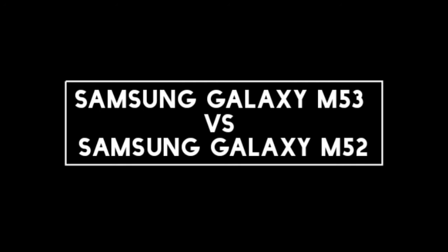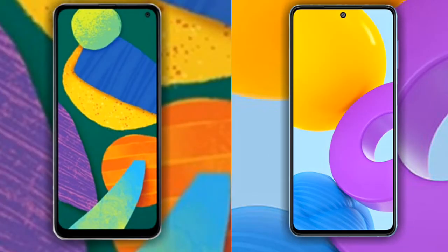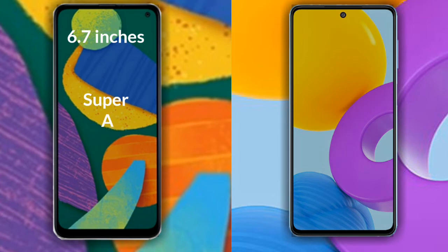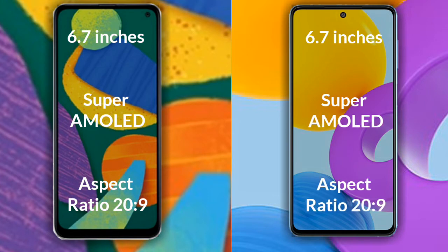I will compare the new Samsung Galaxy M53 with the Samsung Galaxy M52. Let's talk about the display of both phones. The Samsung Galaxy M53 has a 6.7-inch Full HD Super AMOLED display with a 20:9 aspect ratio. The Samsung Galaxy M52 also has a 6.7-inch Full HD Super AMOLED display with a 20:9 aspect ratio.